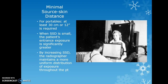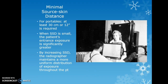When the SSD is small, the patient's entrance exposure is significantly greater. Being too close limits beam divergence, concentrating exposure in a smaller area. By increasing the SSD, the radiographer maintains a more uniform distribution of exposure throughout the patient.